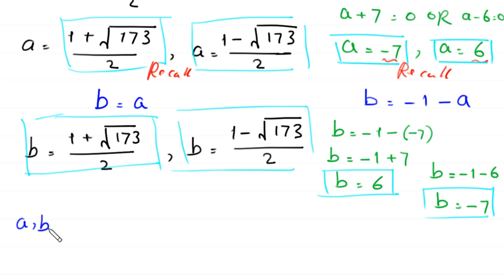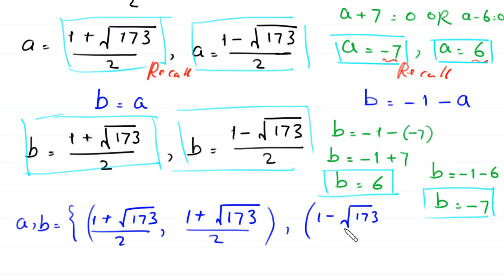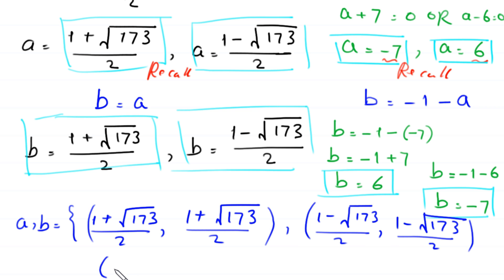The final set of solutions for the pair a comma b is: the first pair is 1 plus root 173 over 2 comma 1 plus root 173 over 2; the second pair is 1 minus root 173 over 2 comma 1 minus root 173 over 2; the third pair is negative 7 comma 6; and the fourth pair is 6 comma negative 7. This is the final answer.